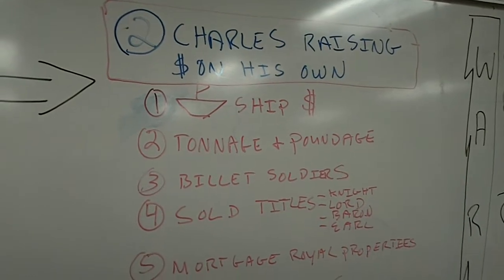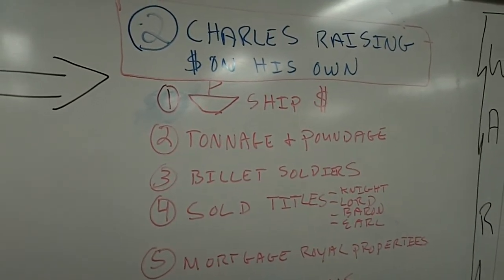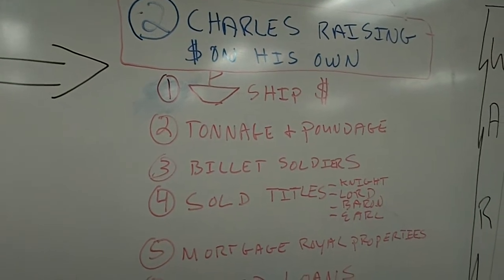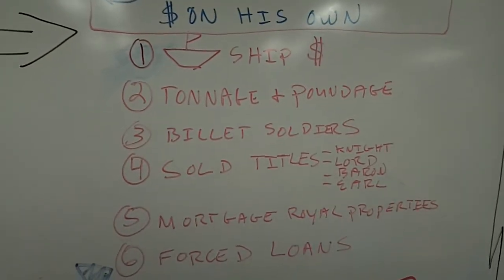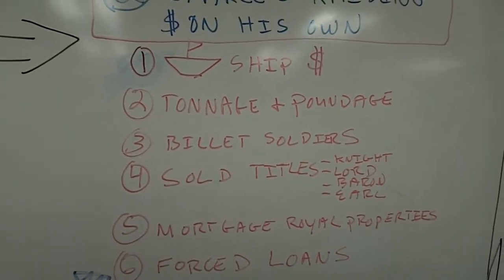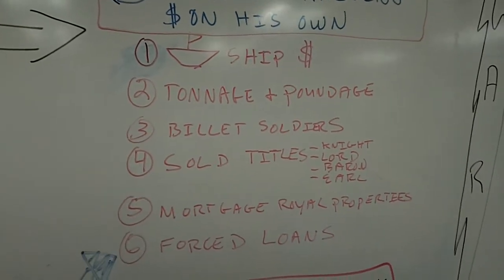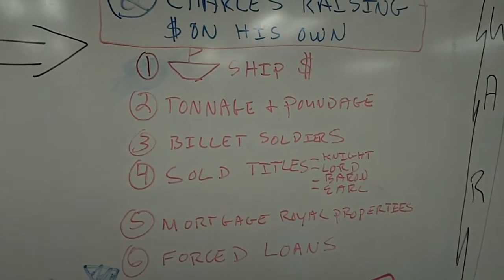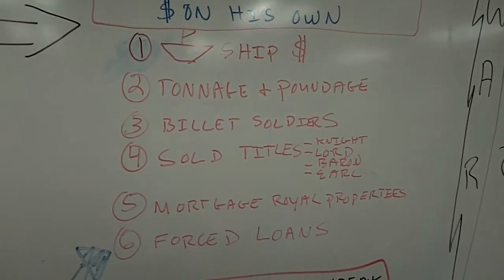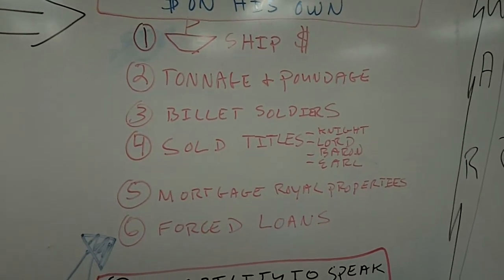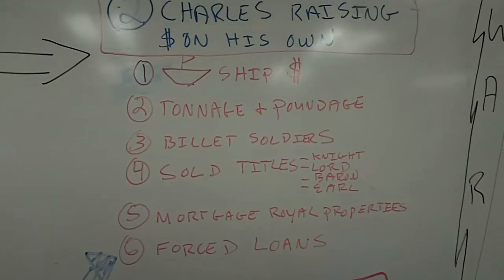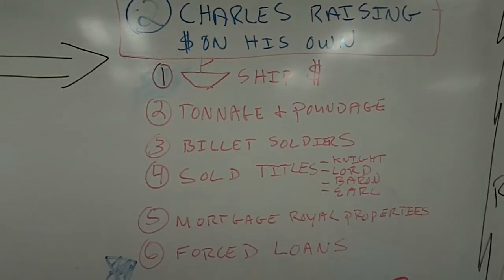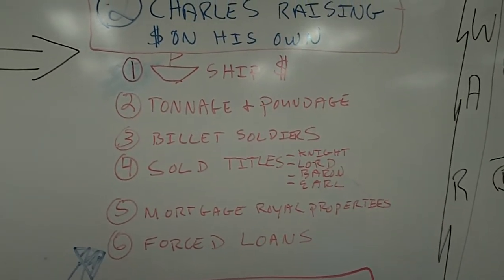He brings back an ancient tax called ship money, which was basically a tax levied on coastal towns to create warships to protect England — but in this case, he just takes that money and uses it on himself. He also brings back an ancient tax called tonnage and poundage, basically a tax on goods coming in and leaving England on ships. He billets his soldiers in people's houses, which makes people very upset. Imagine having a soldier come live in your house and having to feed and take care of him. He also sold noble titles — for the right price you could become a knight, a lord, a baron, an earl.